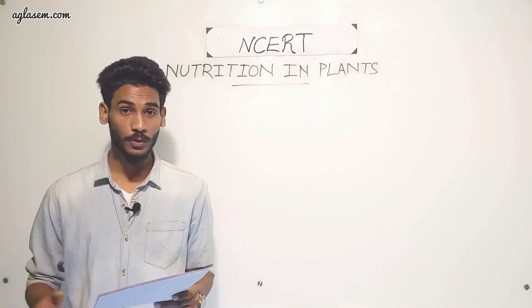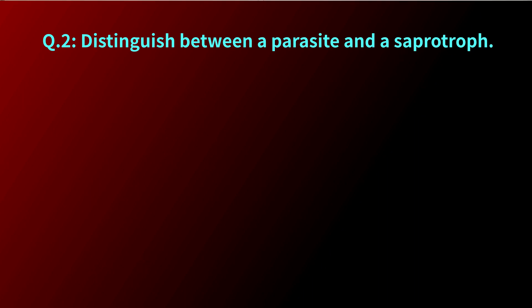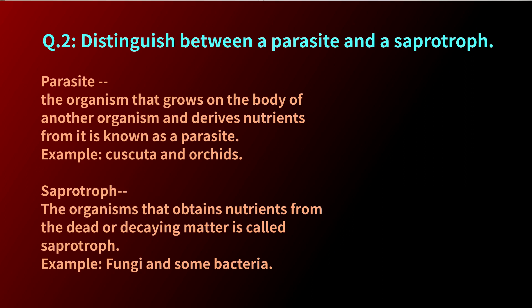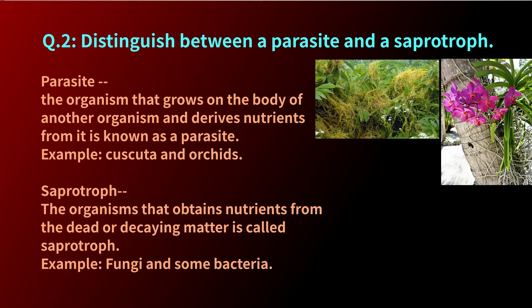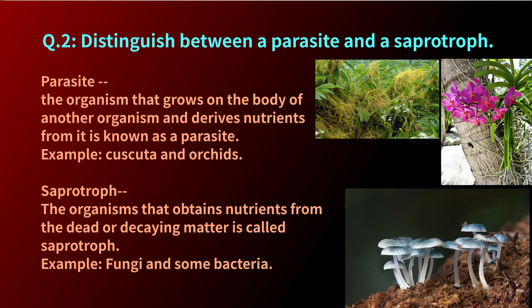The next question is: distinguish between a parasite and a saprotroph. Parasites are organisms that grow on another organism and derive food from them — for example, Cuscuta and orchids. Saprotrophs are organisms that obtain nutrients from dead and decaying matter — examples are fungi and some bacteria.